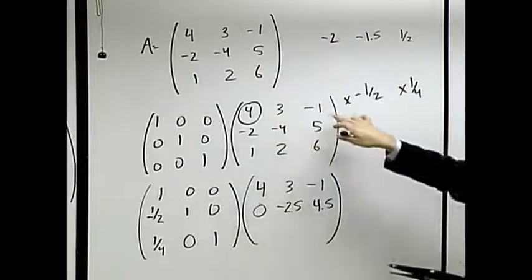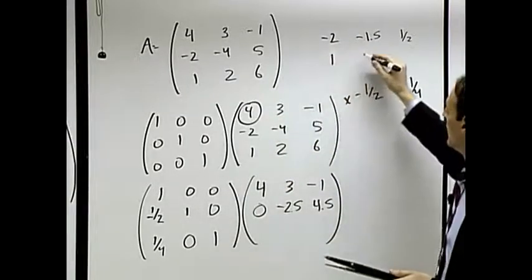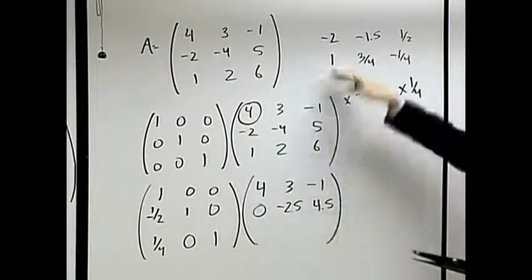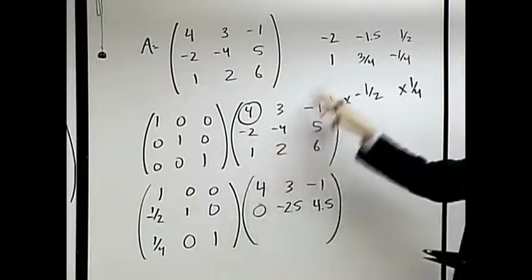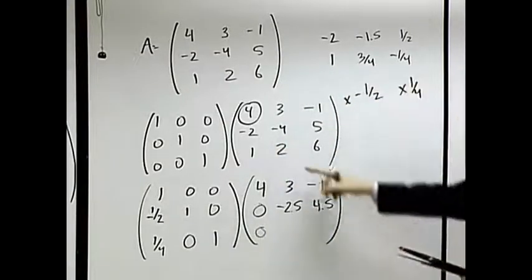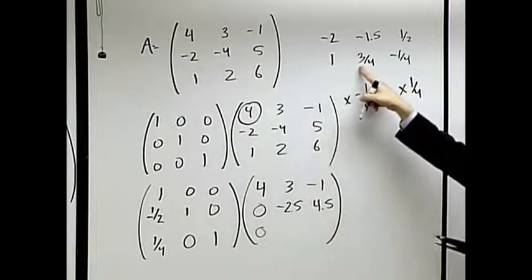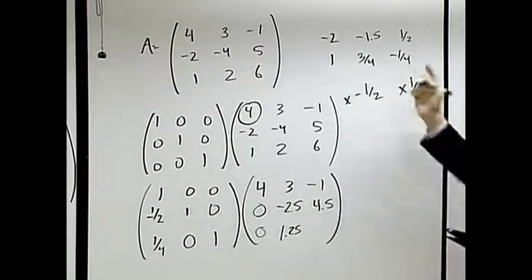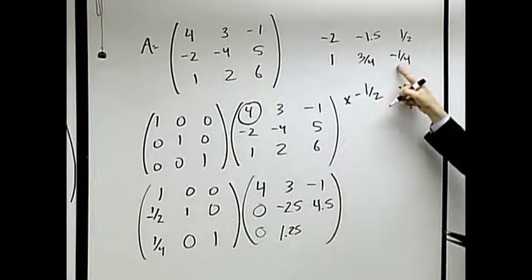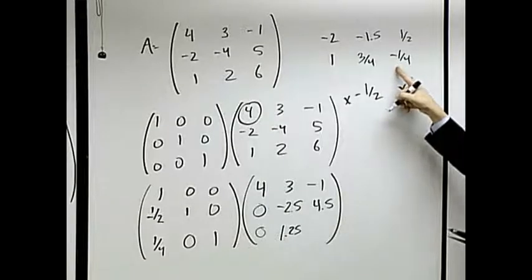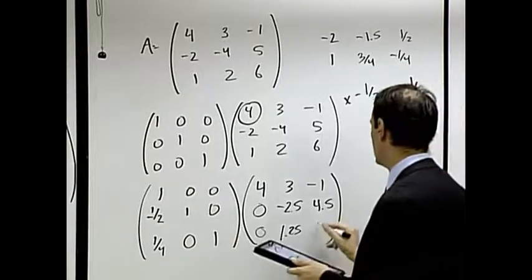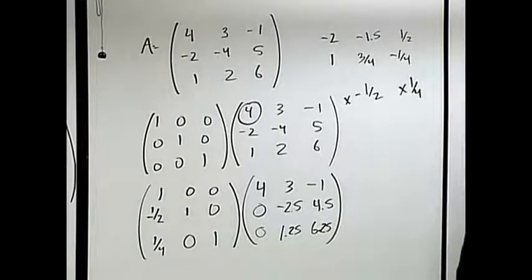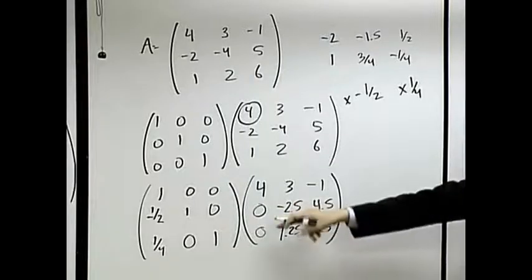I have to use the same algorithm here. So if I multiply this equation by one-fourth, I get one three-fourths, negative a fourth. And now I'm going to do this, subtract that from it. One minus one, zero. Two minus three-fourths, one and a fourth. Six minus a minus one-fourth, plus a fourth, six and a quarter. Six and a half.